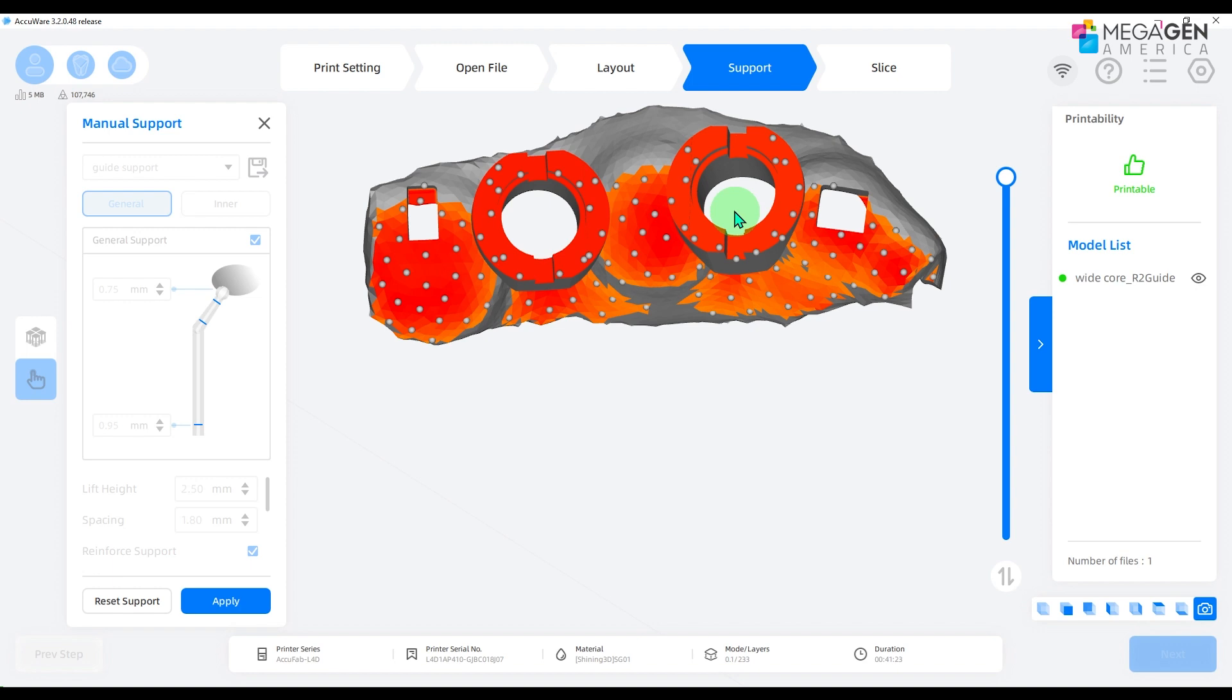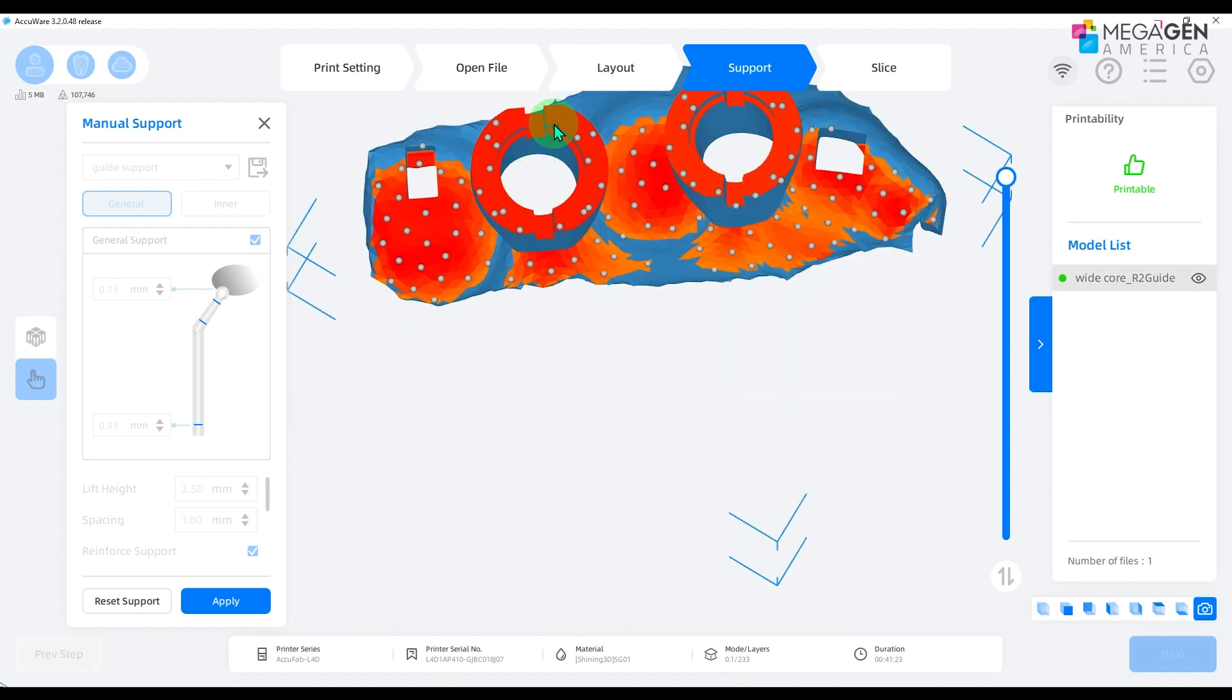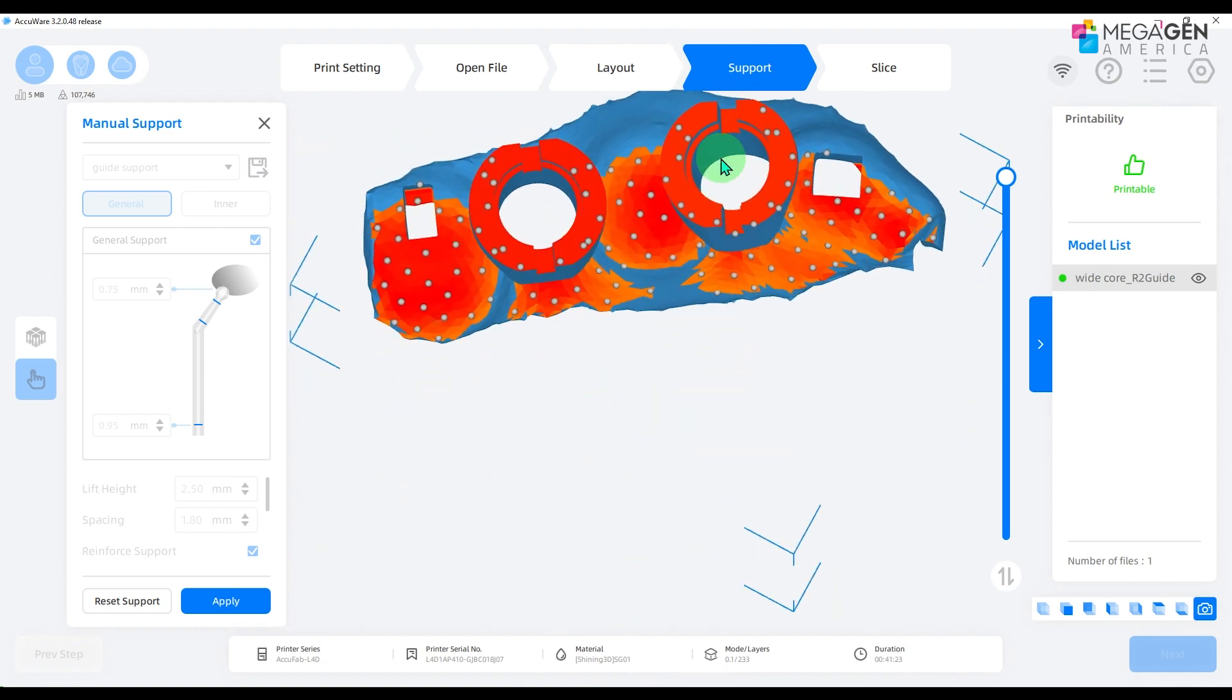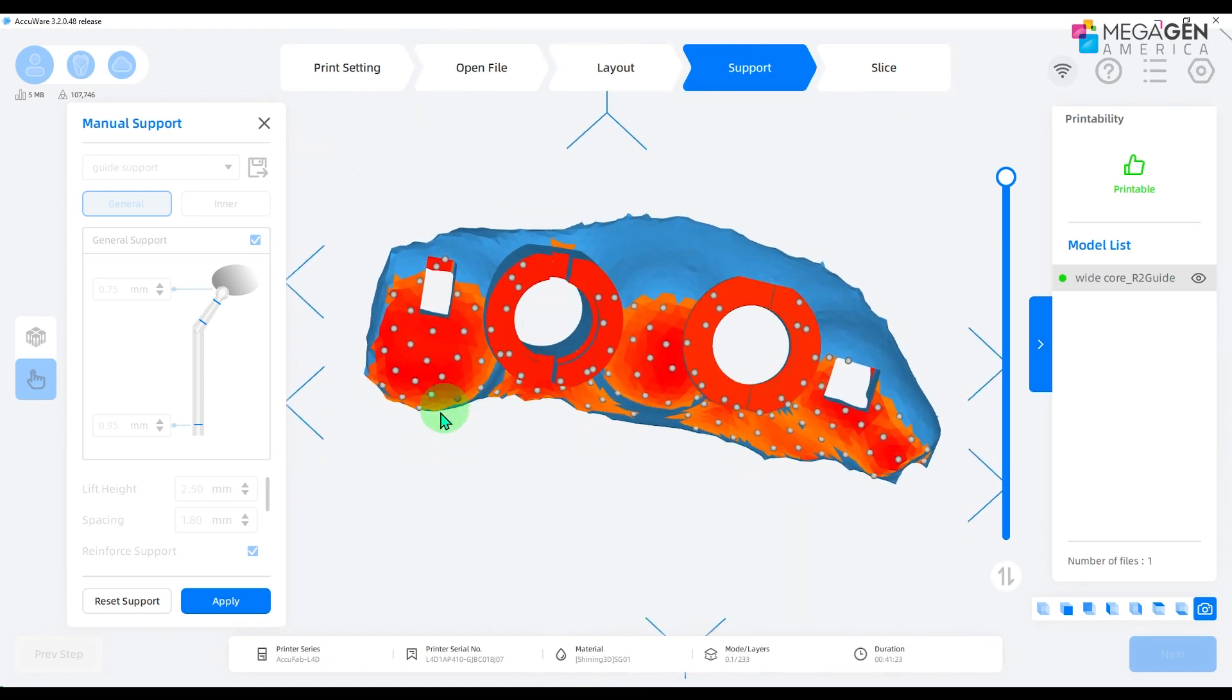Left click on the dots to delete the supports or click on an empty area to add additional supports. If you are satisfied with the location of the support, click the blue apply button on the left.